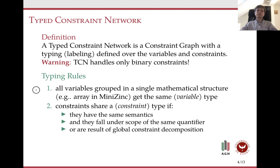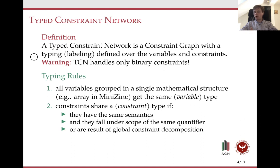As I have said, constraint programming models capture quite a lot of structure in the problem, especially high-level models like MiniZinc or similar models. We lose this structural information when we compile those models to low-level representations like FlatZinc. Our approach to obtain the structural information is the so-called type-constraint network. It is basically a constraint graph with nodes for variables and constraints, where the label is the type of the variable or constraint.